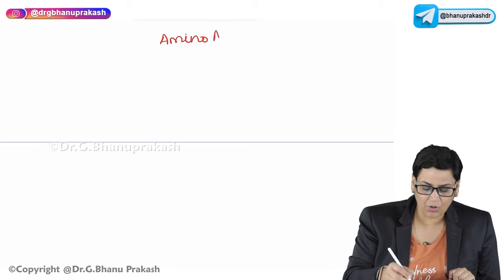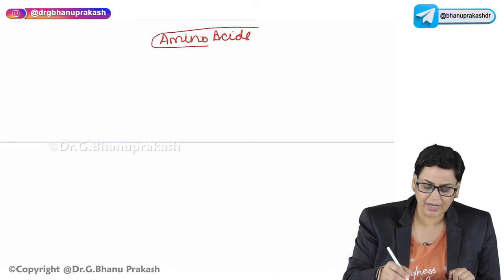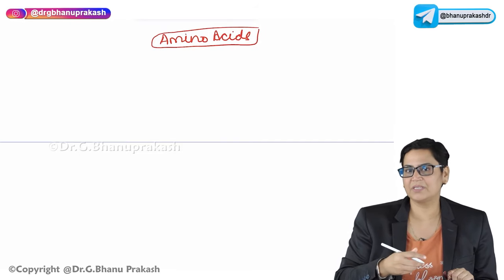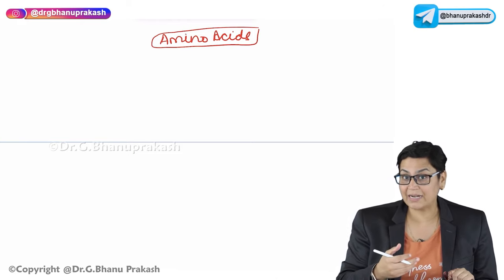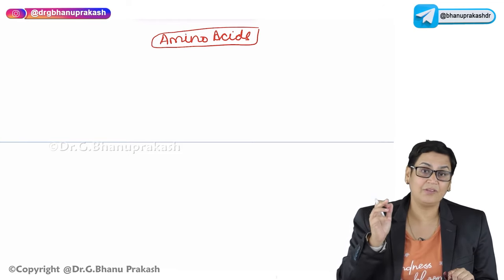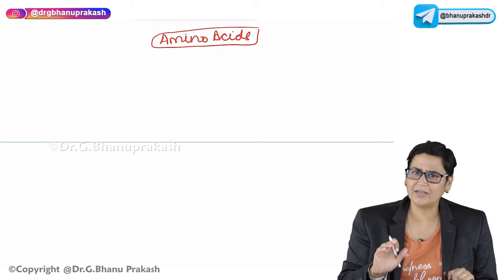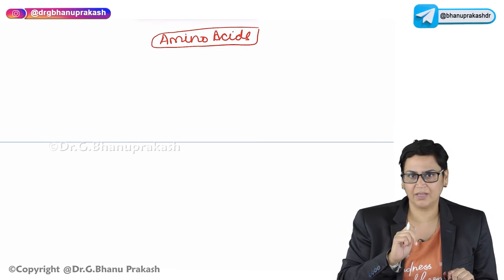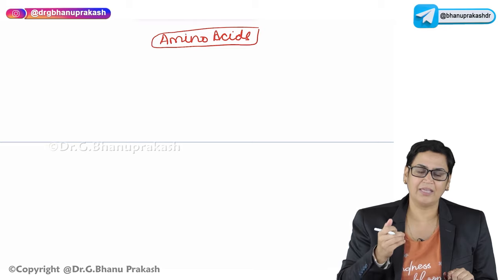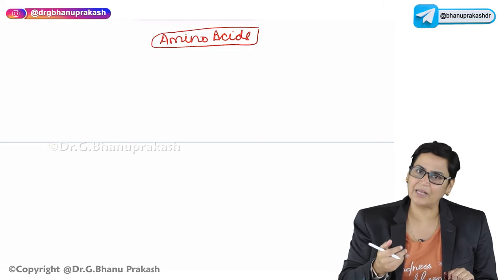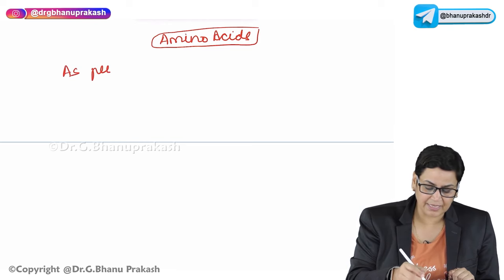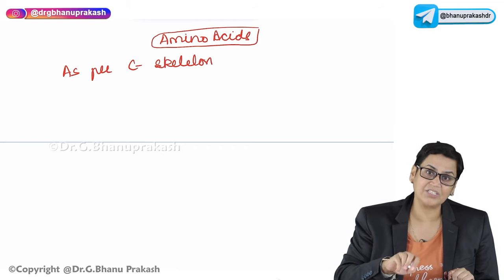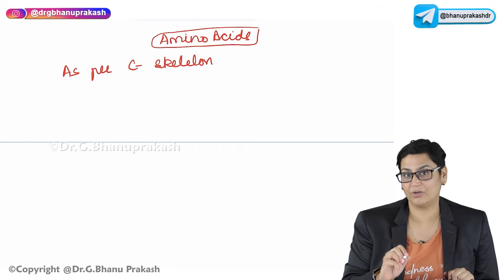Amino acids — we are all familiar with the fact that they have a zwitterion structure, they are amphoteric substances, they can behave as an acid, they can behave as a base. There are 20 standard amino acids, and if we look at the structure of all 20 standard amino acids, there is one common thing in them except the R group, and that is why they have a metabolism as per their carbon skeleton and as per their nitrogen skeleton.